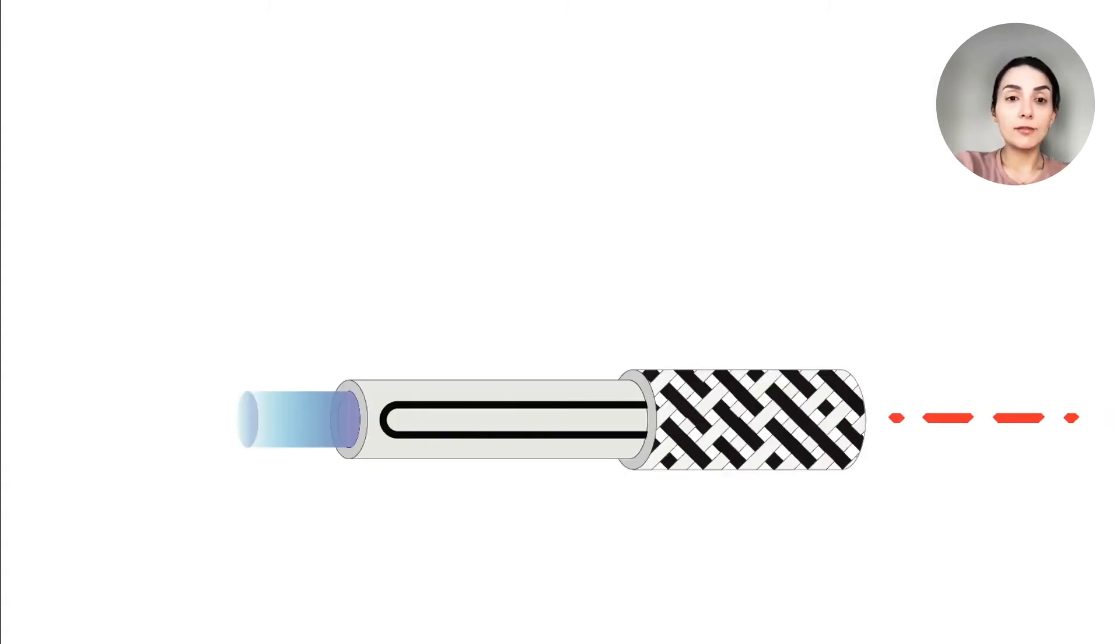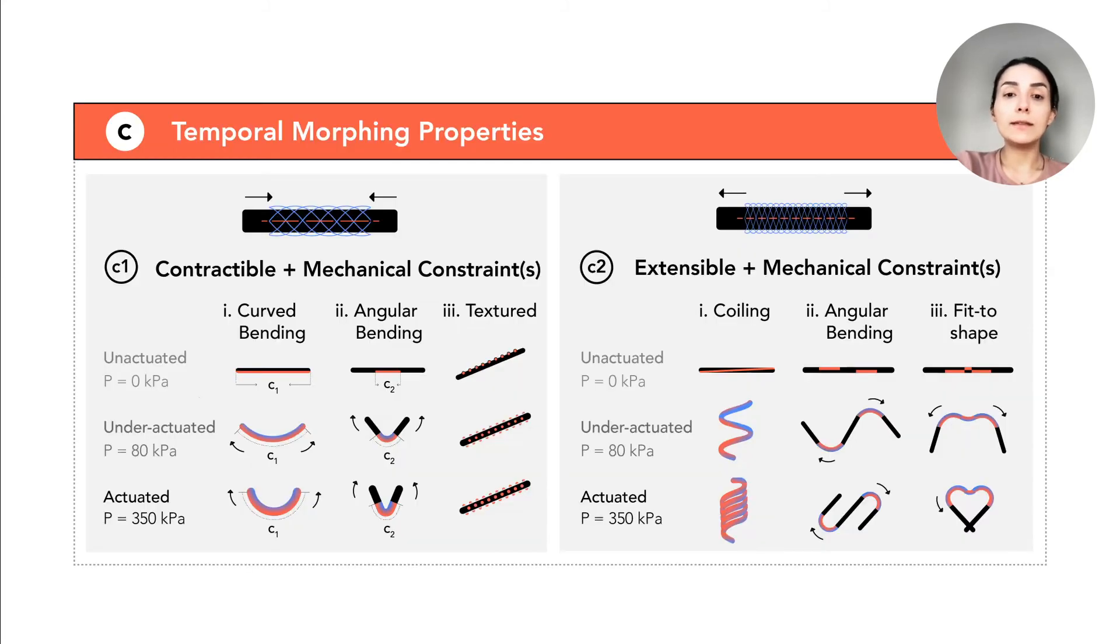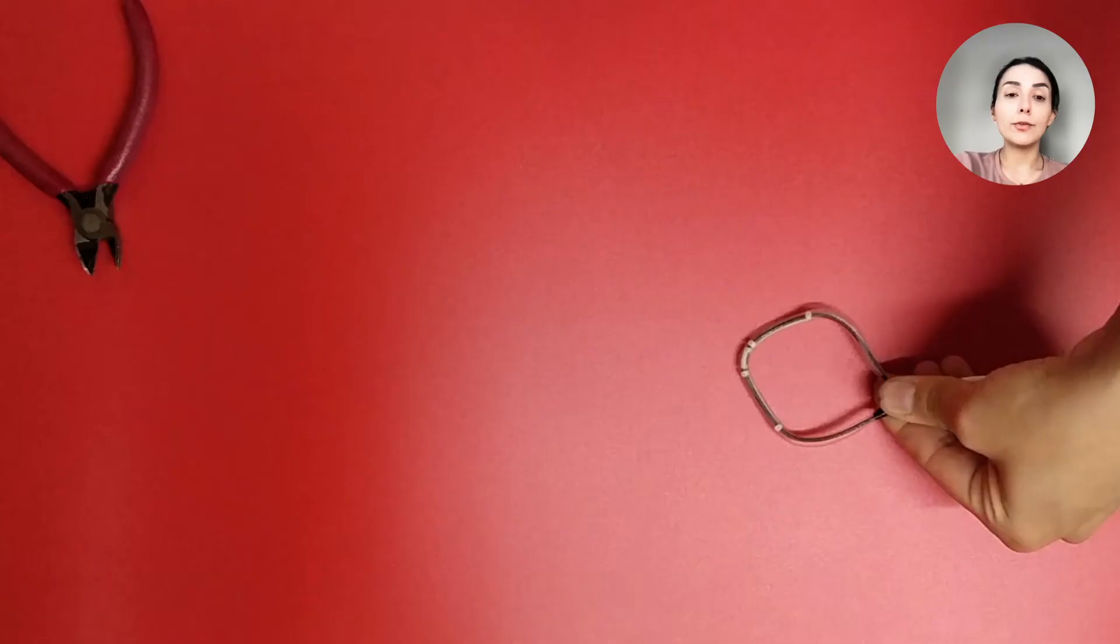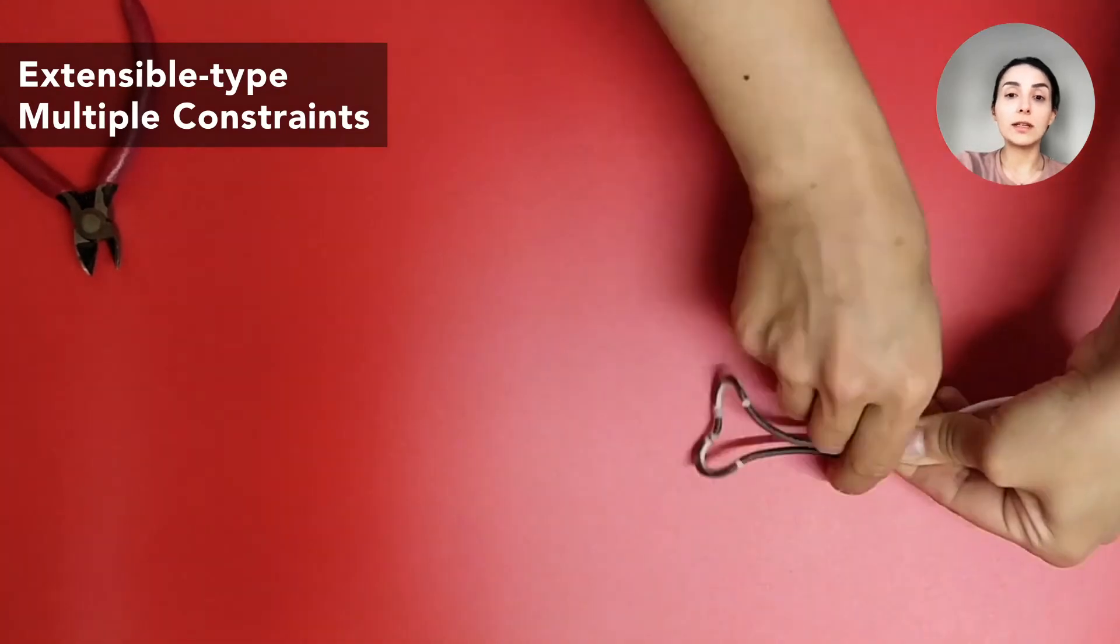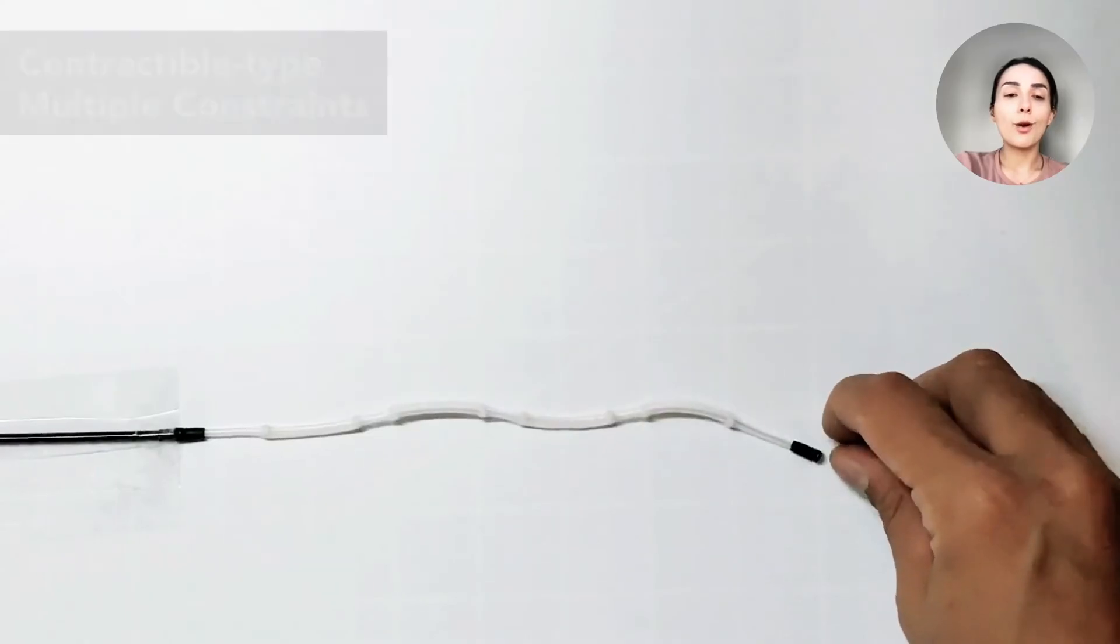These states are programmed with a technique called mechanical constraint. By controlling the length, location, orientation, and number of mechanical constraints added on the basic fiber anatomy, one can design a variety of shapes and movements, such as this iconic heart shape or this waveform.